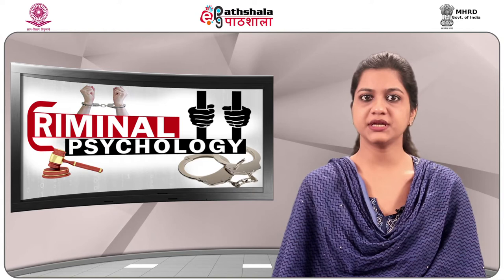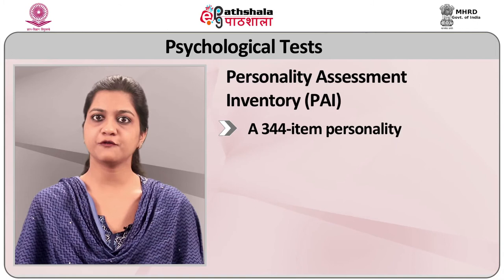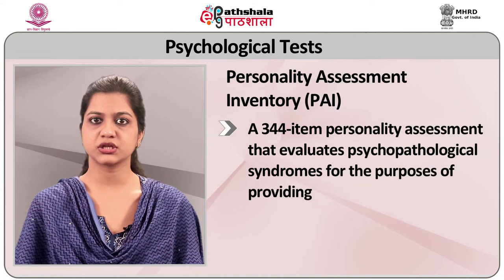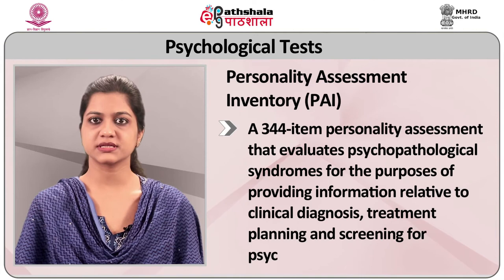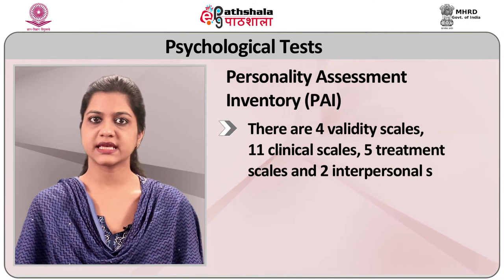PAI (Personality Assessment Inventory) is a 344-item personality assessment that evaluates psychopathological syndromes for the purpose of providing information relative to clinical diagnosis, treatment planning, and screening for psychopathology. There are 4 validity scales, 11 clinical scales, 5 treatment scales, and 2 interpersonal scales. This test is appropriate for individuals 18 years and older and requires a 4th-grade reading level.